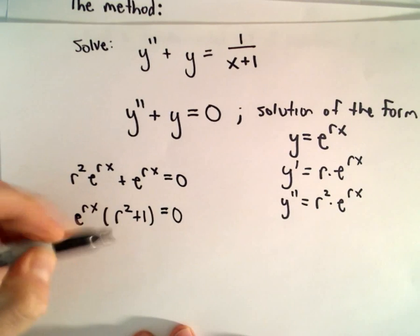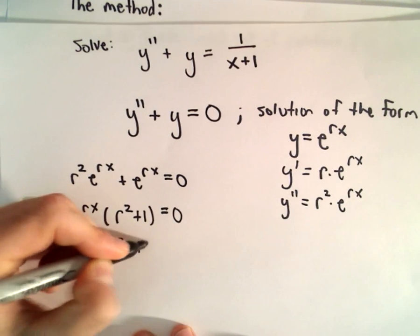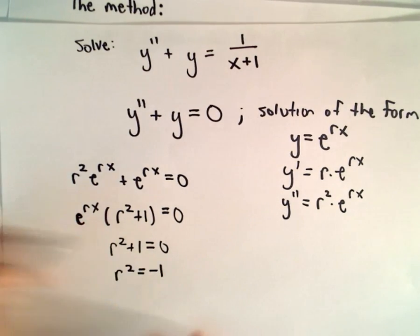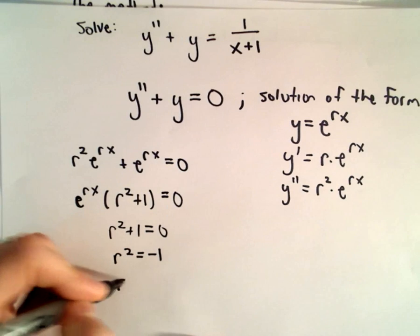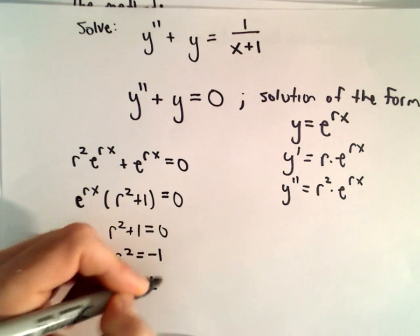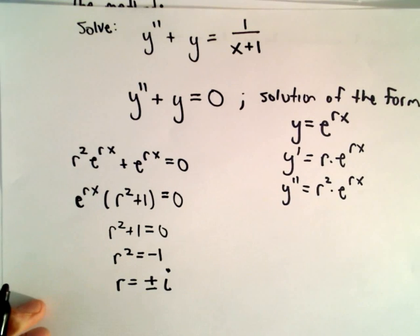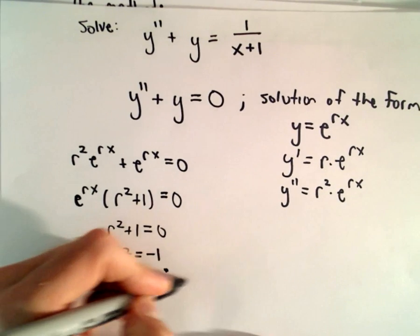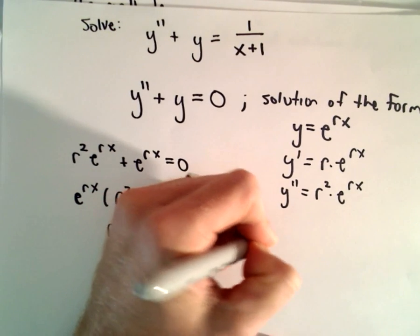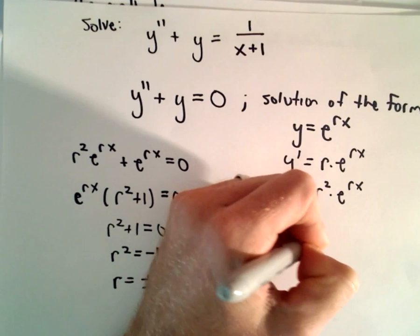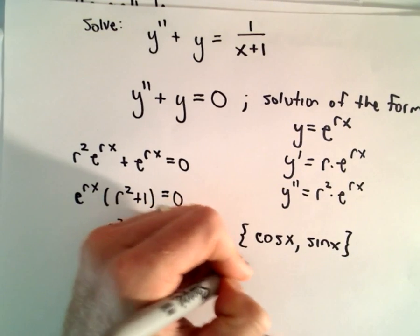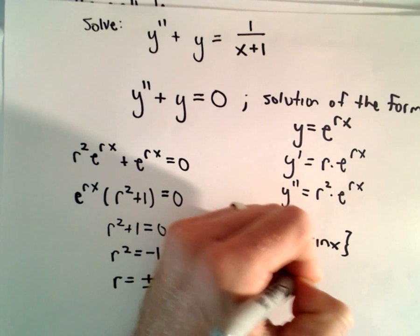Since e to any power never equals 0, that tells us r squared plus 1 would have to equal 0. Solving that, we get r squared equals negative 1, and taking the square root, r equals positive and negative i. This tells us that our fundamental set of solutions consists of cosine of x and sine of x.